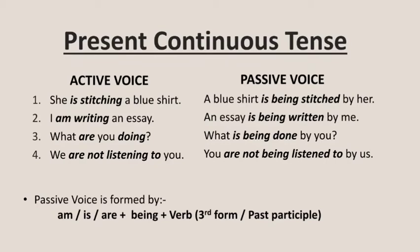Example four: we are not listening to you — when converted into passive voice it becomes: you are not being listened to by us. So, we must remember that in the present continuous tense, passive voice is formed by using am/is/are plus being plus the third form of the verb, i.e. the past participle. This is the structure to follow to convert a present continuous sentence to passive voice.